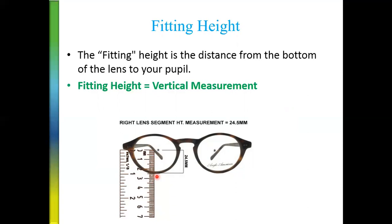Fitting height is the vertical measurement, and it is one parameter which is a bit ignored compared to PD. Whenever we dispense progressive lenses, we give a lot of importance to the PD, but sometimes the fitting height is getting ignored and we are not measuring the correct fitting height — and that is one reason why progressive lens adaptation is a little less.